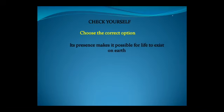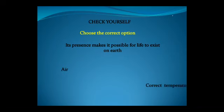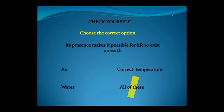Next question: Its presence makes it possible for life to exist on Earth. Options are Air, Correct temperature, Water, or All of these. What will be the correct answer? All of these are correct. Air, correct temperature, and water—everything makes it possible for life to exist on Earth.